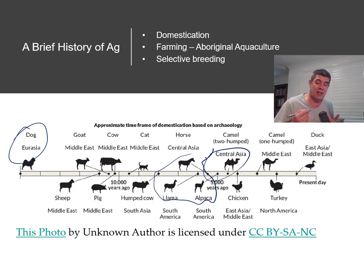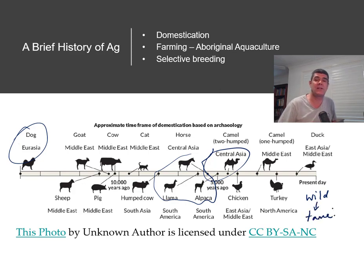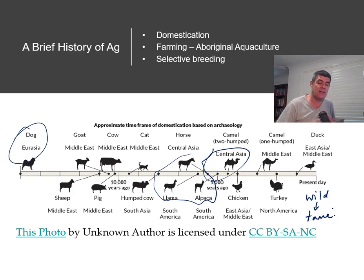The main thing we're looking for in the process of domestication is turning wild to tame. The most important thing is we want these animals to coexist with us — we want them to be docile and tame. We want to be able to manipulate what's going on, have them stay in places we want, graze and do what they need to do, but we need to have some level of control.